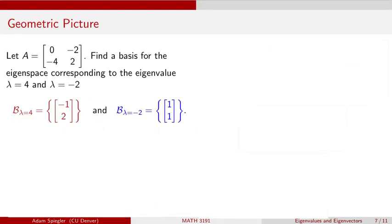Let's take a look at the corresponding geometric picture in Rⁿ with these eigenvalues and eigenspaces. Going back to the 2 by 2 case: matrix A had first column 0, -4 and second column -2, 2. We found two eigenvalues — λ = 4 and λ = -2. The eigenspace for λ = 4 is spanned by the vector (-1, 2), and a basis for the eigenspace corresponding to λ = -2 contains one element: the span of the vector (1, 1).